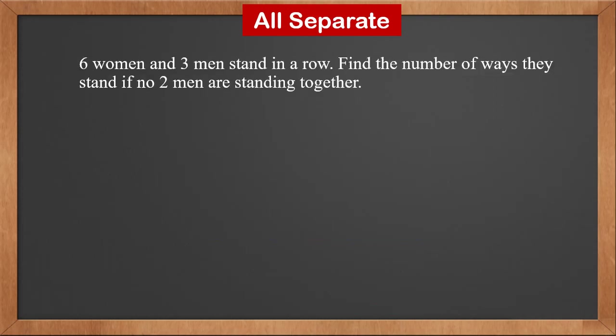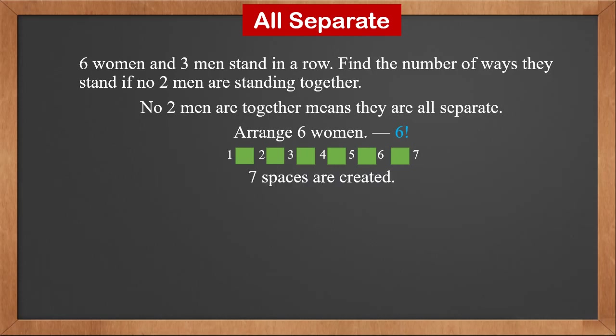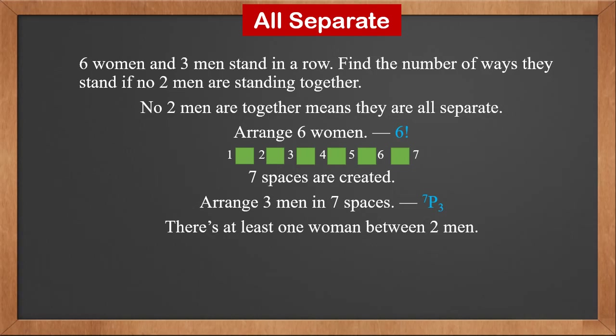Six women and three men stand in a row. Find the number of ways they stand if no two men are standing together — meaning all men are separate. First, arrange the six women: that is 6!. These six women create seven spaces. Arrange the three men in those seven spaces: that is 7P3. Doing this ensures at least one woman is between any two men, so all men are separate. The answer is 6! × 7P3 = 151,200.